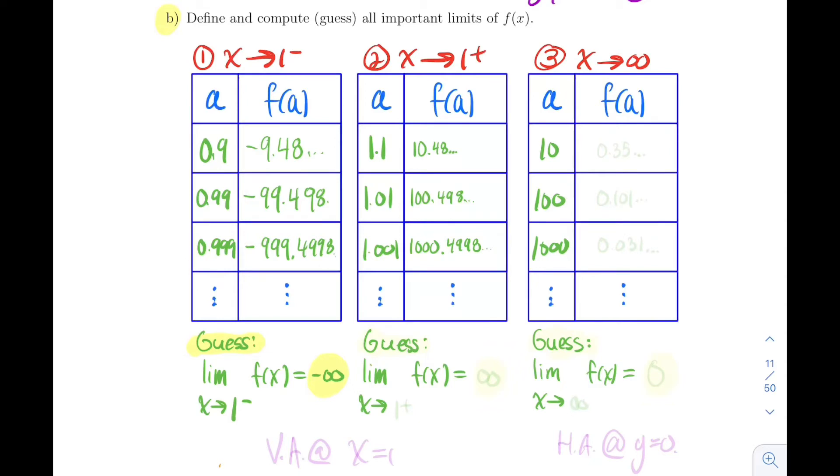My guess for my limit as x approaches 1 plus for my function is going to be infinity. So we get infinity here, vertical asymptote for sure.